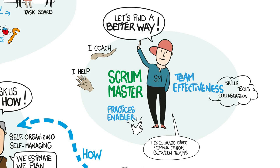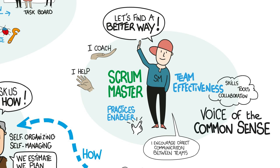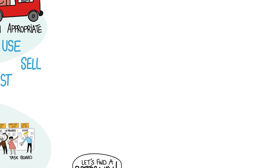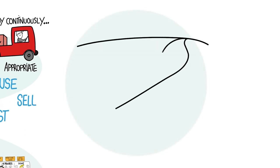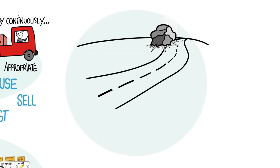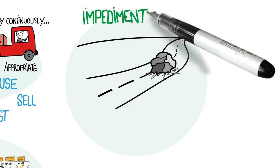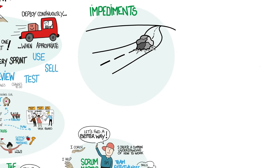Of all the metaphors for the Scrum Master, I find 'voice of common sense' to be the most compelling. Common sense is often not very common, so the Scrum Master helps the developers, the product owner, and the organization to create a common understanding of how to work together effectively. Anything that slows the team down is considered an impediment. Most impediments arise within the Scrum Team. The Scrum Master may not resolve these issues personally, but is accountable that they are recognized and dealt with promptly.